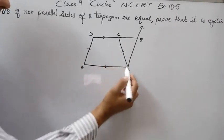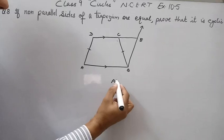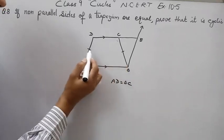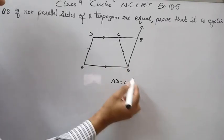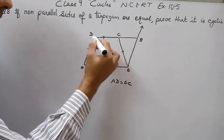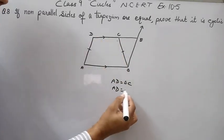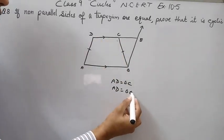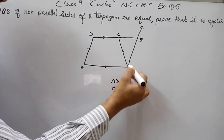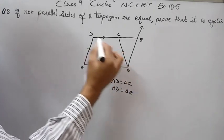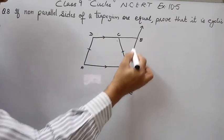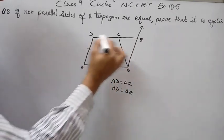AD is equal to BC — this is given. And AD is equal to BE also, because these are opposite sides of a parallelogram.